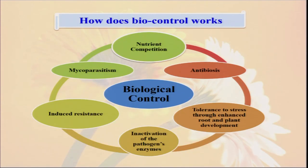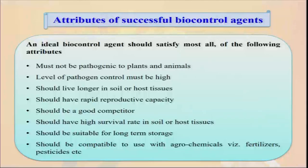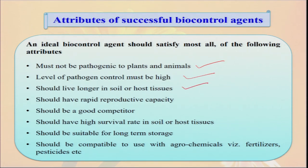How does biocontrol work? They have mycoparasitism — they are attacking different types of insects, fresh larvae, larva parasitization, egg parasitism, and they also have antibiosis and competition with nutrients. Ultimately, they can induce resistance, and in a holistic approach, biological control can help in enhancing our yield and quality food under organic farming. What attributes should a successful biocontrol agent have? It must not be pathogenic to plants and animals. The level of pathogen must be high — it should live long. After we apply it, it should survive for a lengthy period in the soil so that when the next population of insect pests or diseases comes, it can attack. It should have rapid reproductive facility, should be a good competitor, have a high survival rate, be suitable for long-term storage, and be compatible with other agrichemicals.